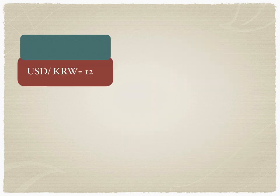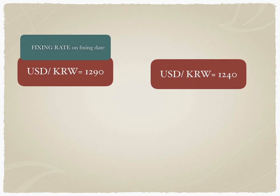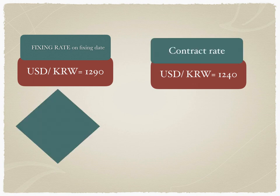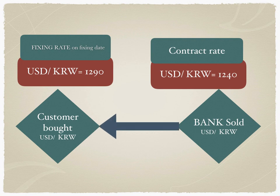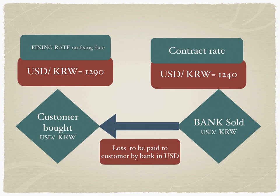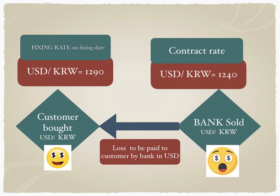The USD/KRW rate on the fixing date is 1290; on the contracted date it was 1240. The customer bought USD/KRW and the bank sold it. The bank sold at 1240 but the fixing rate is 1290, so it's a loss for the bank. The bank must pay the loss to the customer in USD. This is a brief understanding of NDF — we'll explore actual calculations of notional amounts in another video.